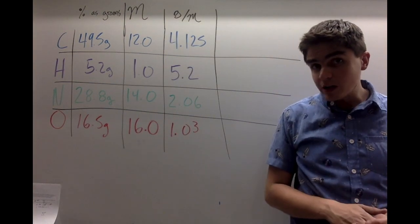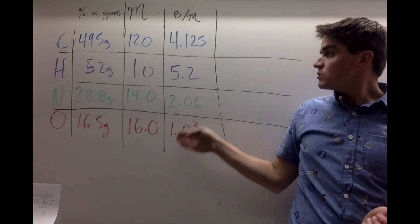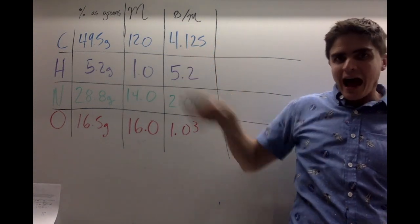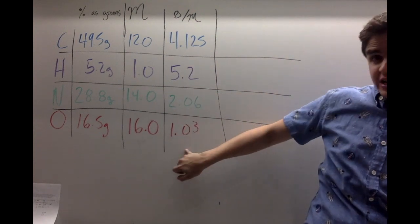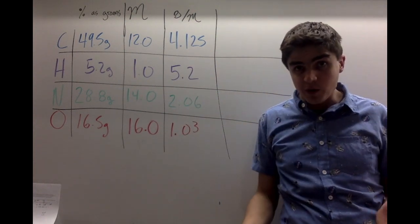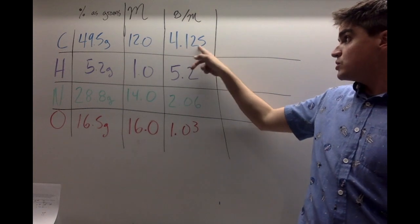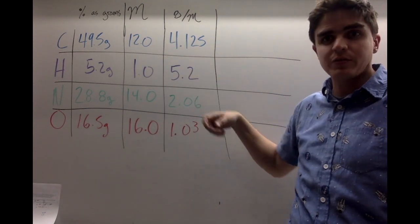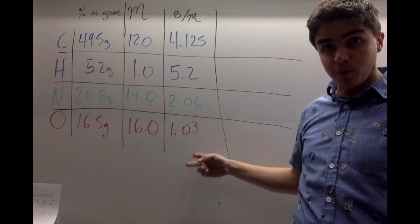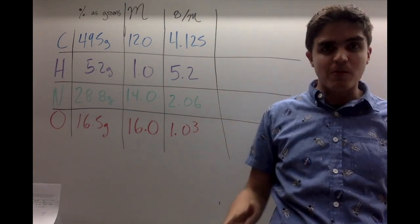Great. Now, we're almost in the home stretch. These, again, aren't our final answer. I need to divide by the smallest number. So 4, 5, 2, here we are. I need to divide everything by 1.03. So I'm going to take 4.125 and divide it by 1.03. I'm going to take 5.2 and divide it by 1.03. I'm going to take 2.06 and divide it by 1.03. I'm going to take 1.03 and divide it by 1.03.